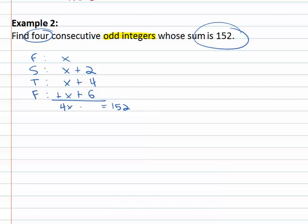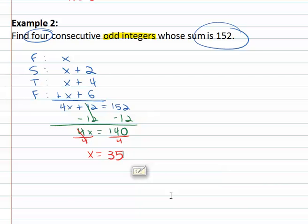We've got four x's added up plus adding the like terms we've got 12. 4x plus 12 equals 152, and we can quickly solve by subtracting 12 giving us 4x equals 140.